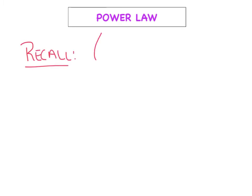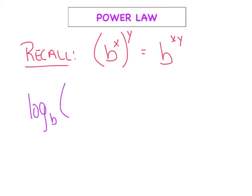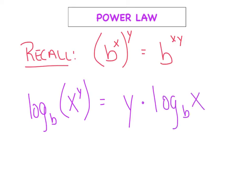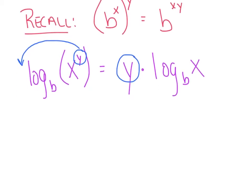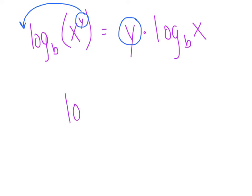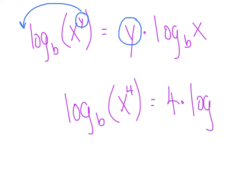Our third rule is called the power rule. Recall what we know about exponents: if we have b raised to the x and raise that entire expression to the y power, we multiply the exponents and get b raised to the xy power. So today, if we have log base b of x raised to the y, we're going to say y times log base b of x. In other words, what used to be the exponent is now the coefficient. For example, log base b of x to the fourth can be written as four times log base b of x.